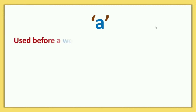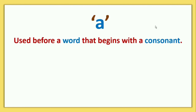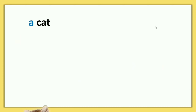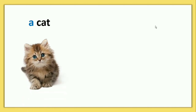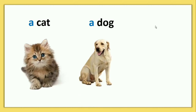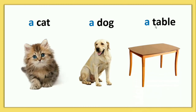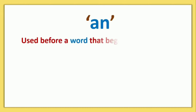Now we will see article A. A is used before a word that begins with a consonant. Consonants are all letters except vowels. For example: a cat, a dog, a table. So when a word starts with a consonant, we will use the article A.